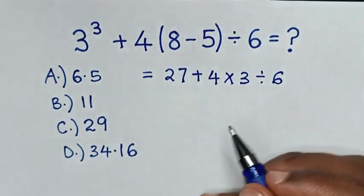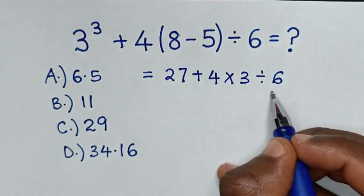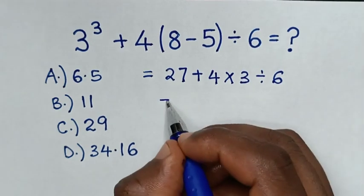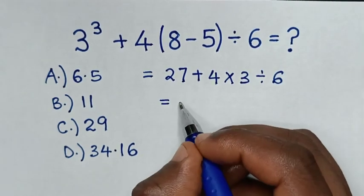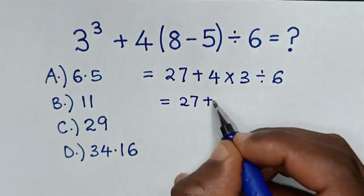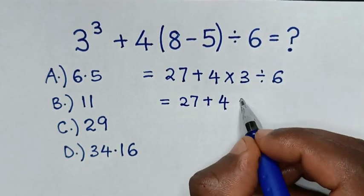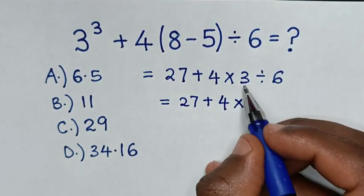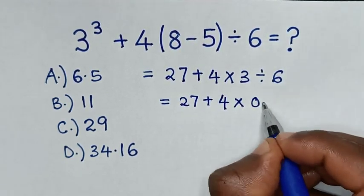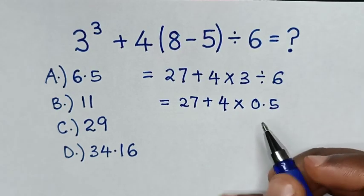Then, in the next step, we will deal with 3 divided by 6, which is 0.5. So it will be equal to 27, plus 4, then times 3 divided by 6, which is 0.5, or a half.